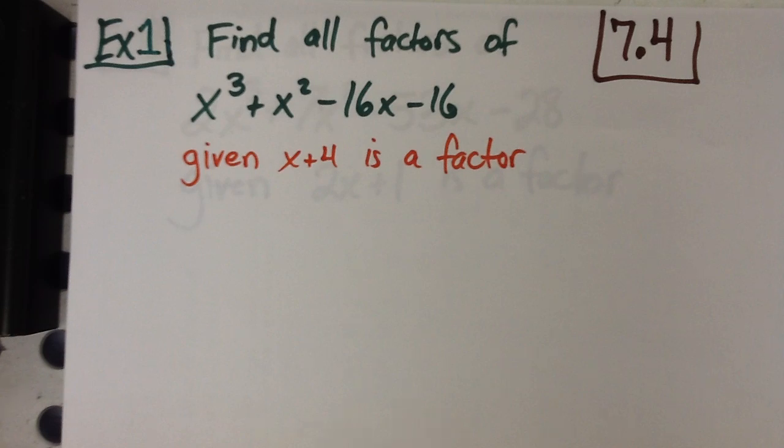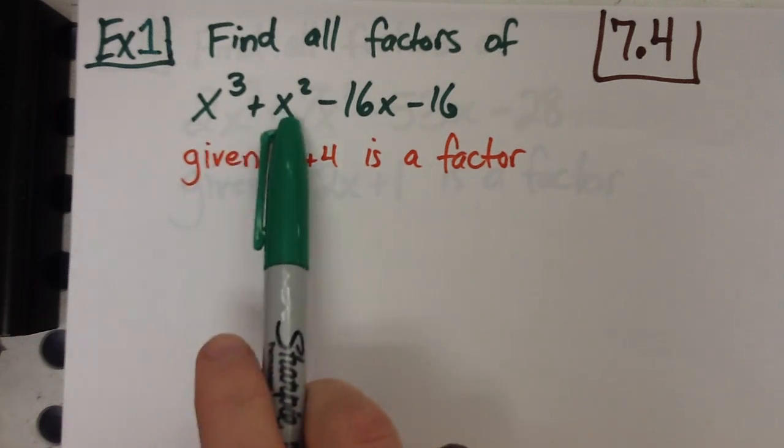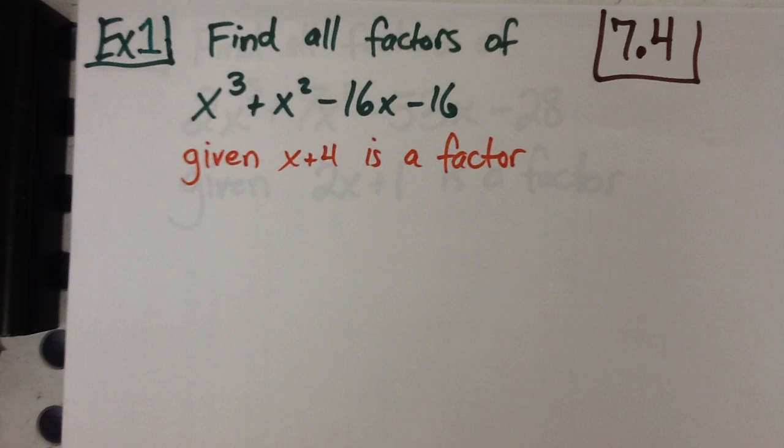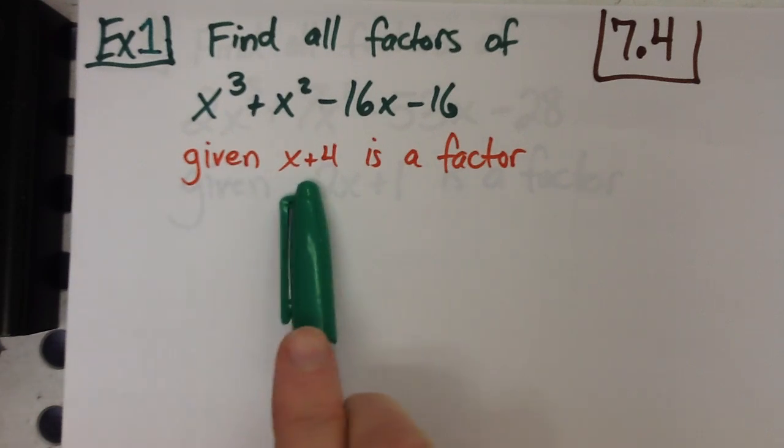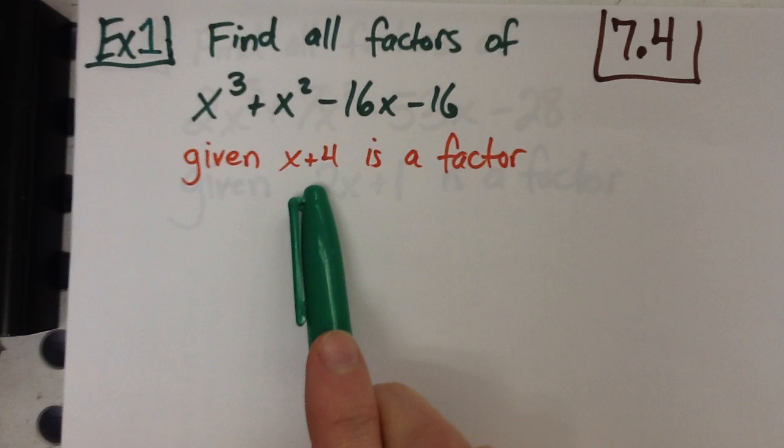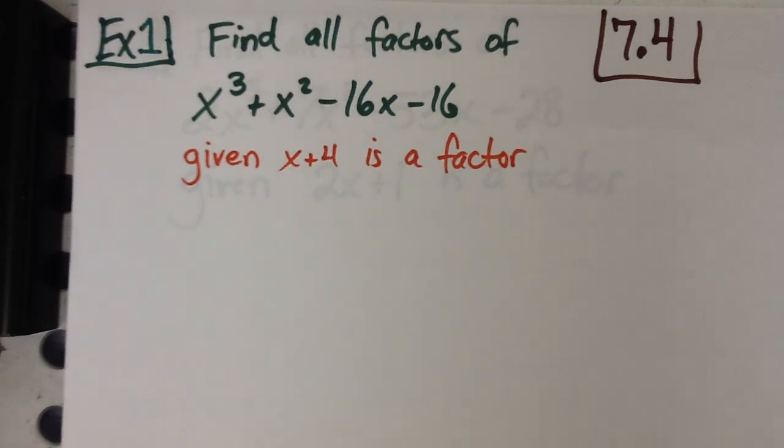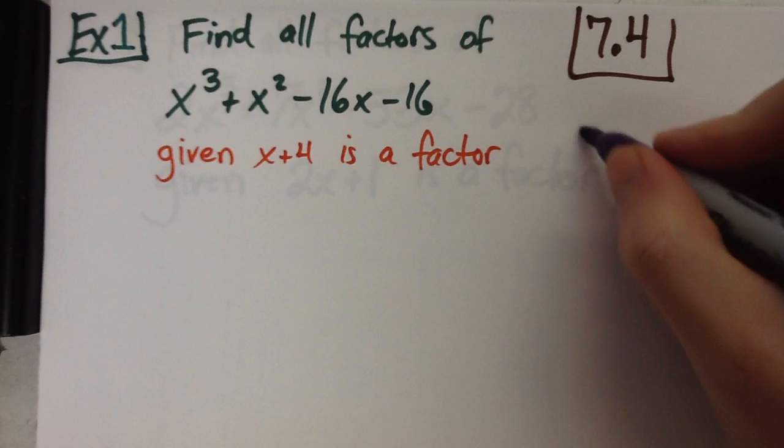I'm going to start you off with this example. Find all factors for x cubed plus x squared minus 16x minus 16. You are giving one of your factors, x plus 4. So maybe a way to set this or start it off is somewhere off to the side. Make a list of all your factors.